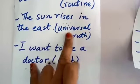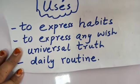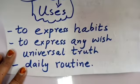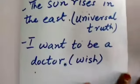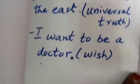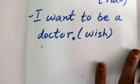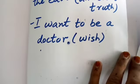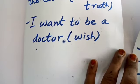'The sun rises in the east' — 'sun' is singular so 's' is added to 'rise'. This is a universal truth, so we use present indefinite tense. 'I want to be a doctor' is a wish. 'She wants to be a pilot' — 'she' is singular so 'wants' gets 's'. Similarly, 'My brother wants to be a pilot' — 'brother' is singular so 's' is added.